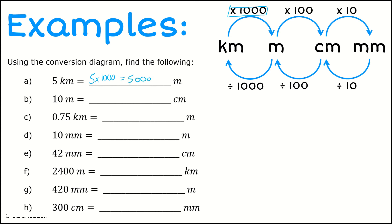The next one, we want to go from meters to centimeters. So I want to multiply by a hundred. I'm going to say 10 times 100, and that's going to give me one with three zeros on it — so that's a thousand centimeters.